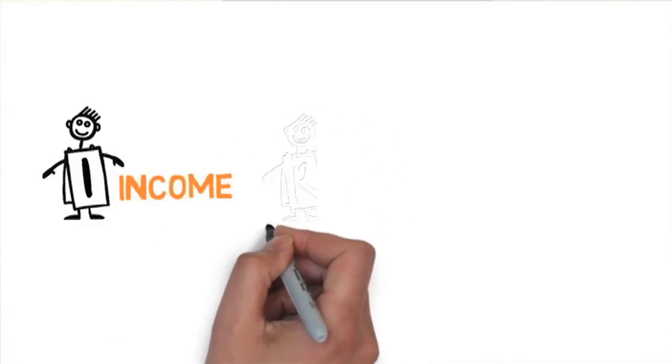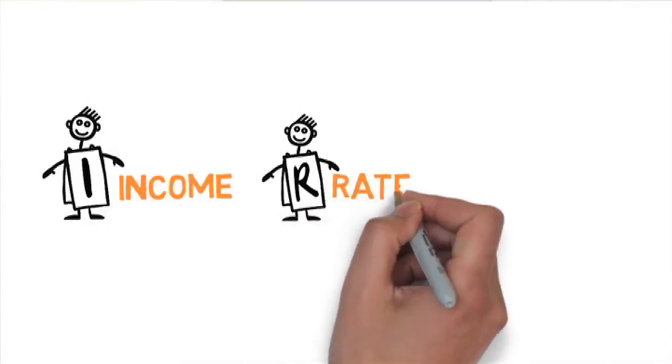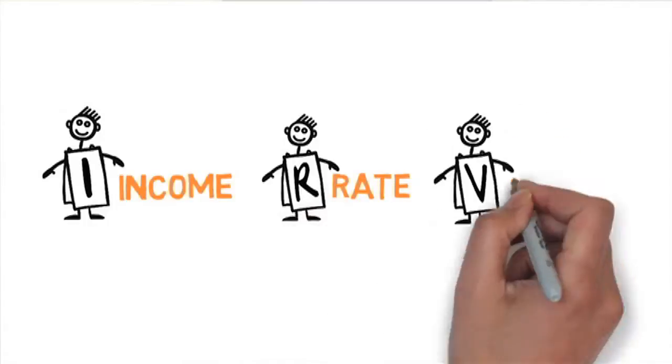The I in Irv stands for income. The R stands for rate, also known as capitalization rate or cap rate. It's basically your rate of return. The V stands for value.